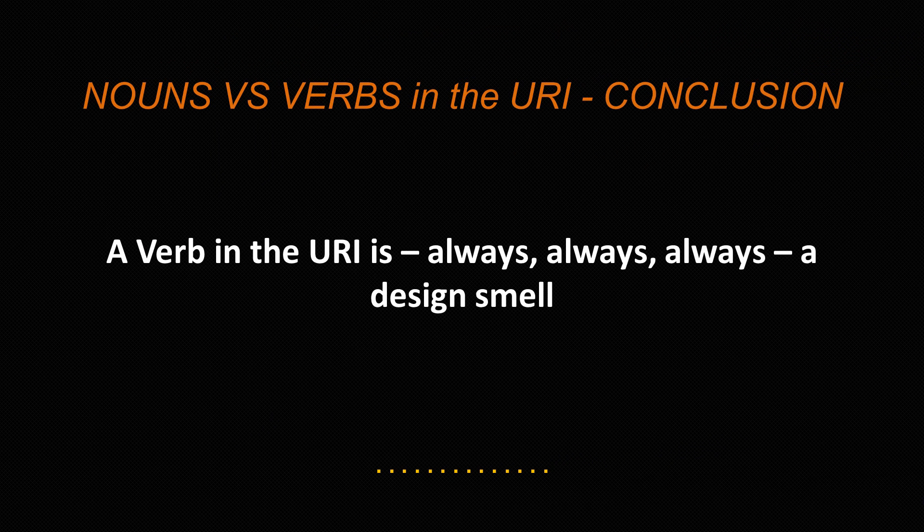If you're just starting off with API design, or even if you've done a couple of APIs, this is a great rule of thumb: a verb in the URI is always, always, always a design smell. Which means we have a good trigger signal and a good opportunity to improve the design of the API. That usually means some domain modeling — we have not done enough work extracting out the domain of our application into resources.